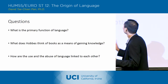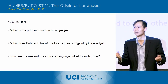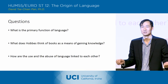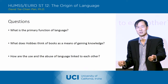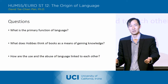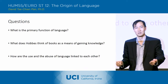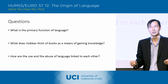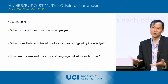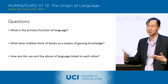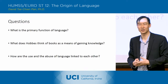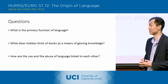What does Hobbes think of books as a means of gaining knowledge? So they're very helpful because you need other words in order to talk about truth, but you can't lean on them too much because they can also be false. You have to think for yourself, in a sense.